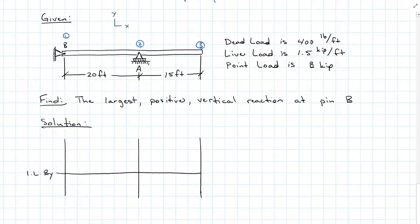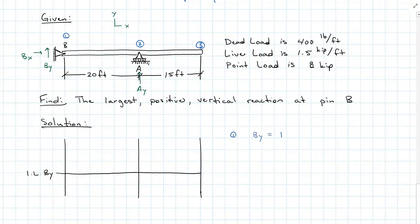Setting up our ordinate system, we're going to have a vertical reaction B_Y, a horizontal reaction B_X, and a vertical reaction A_Y. We know that when the load is at B, B_Y is equal to 1, and at location A, B_Y will equal 0. So we need to solve for B_Y when the load is at the free end.